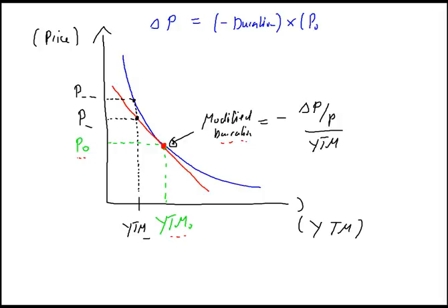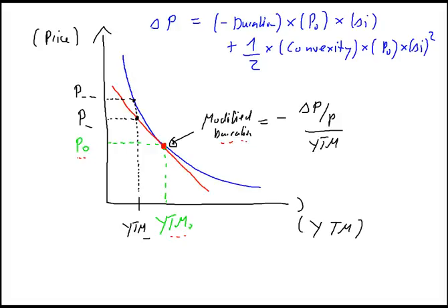The price change equals minus modified duration, times the price of the bond before the change in interest rates, times the change in interest rates. Then we have to add to it one-half times the convexity of the bond, times the price of the bond, times the change in the level of interest rates squared. So, if you are just calculating the price change using duration, we will not come up with the price observable in the market, because duration measures only the linear relationship between bond price and yield to maturity — but this relationship is non-linear.